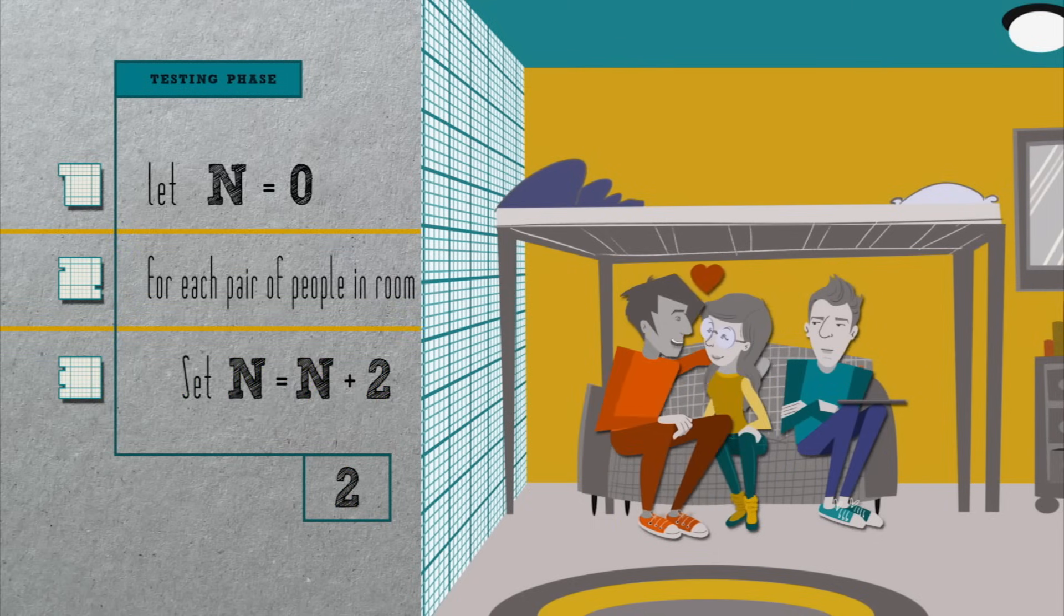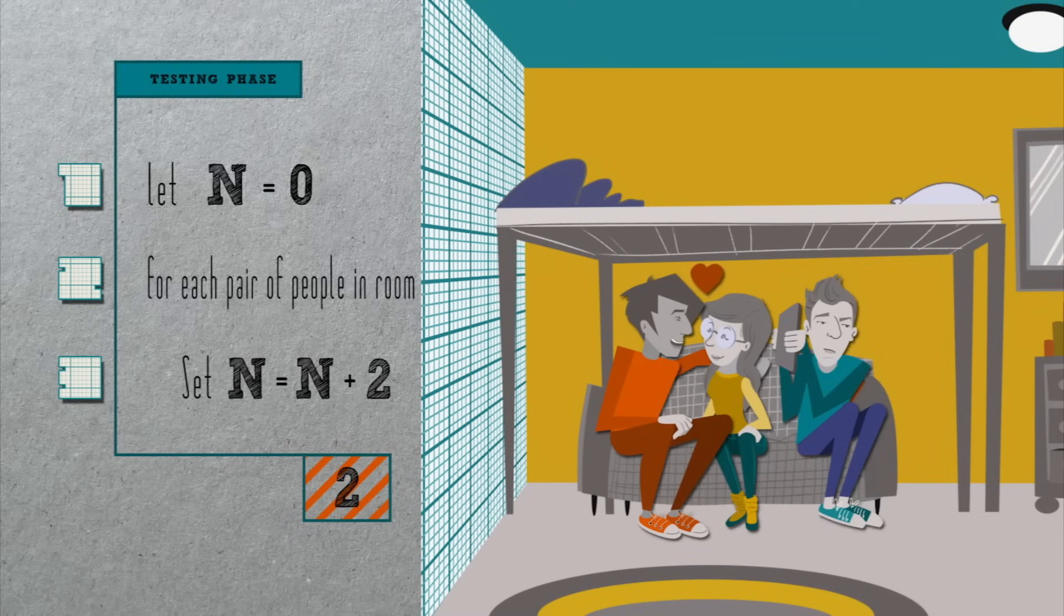There isn't another full pair of people in the room, so line two no longer applies. And so by this algorithm's end, n is still two, which isn't correct. Indeed, this algorithm is said to be buggy because it has a mistake.